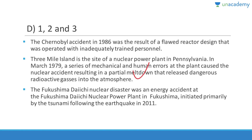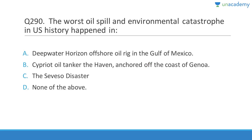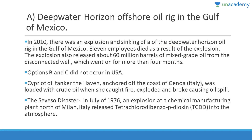Question 290: The worst oil spill and environmental catastrophe in the US happened at the Deepwater Horizon offshore oil rig in the Gulf of Mexico. Options B and C did not occur in the USA. There is even a movie starring Mark Wahlberg about the Deepwater Horizon disaster.